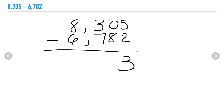Moving on to my tens place: 0 minus 8 — I know I can't take away 8 from 0, so I'm going to need to regroup from my hundreds place, which means I'm going to need to borrow 100 from my 300s. If I borrow 100 from 300, that means I'm left with 200.